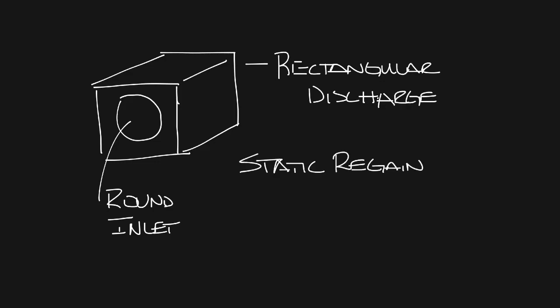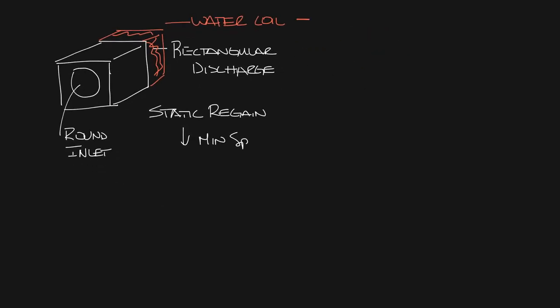For this reason the rectangular discharge cross-section is usually at least twice the size of the round inlet. Hot water coils were designed to fit the rectangular discharge to provide adequate amount of heating when supplied with 180 degree water which was the standard for many years.